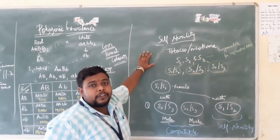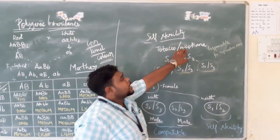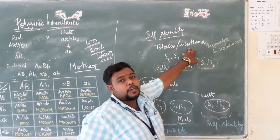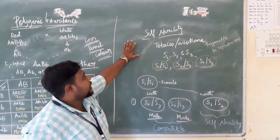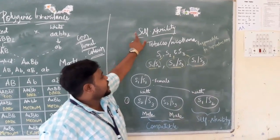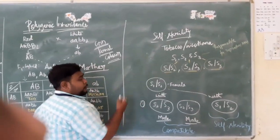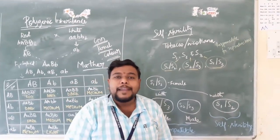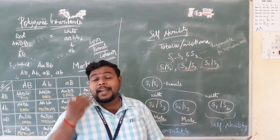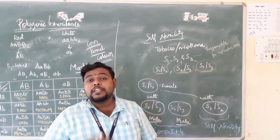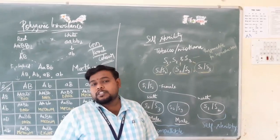The last concept we are going to complete here is self-sterility in case of tobacco or Nicotiana. This will be the last part of your second unit in paper 7 of your DSC. Here we can observe that in case of the tobacco plant, there is a complete prohibition or complete avoiding of self-pollination. The plants will never get self-pollinated at all, because of this particular mechanism working in the tobacco or Nicotiana plant.